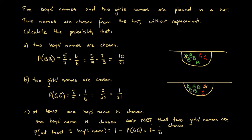So we rewrite this as one minus one over 21. Writing one as 21 over 21, we get 21 over 21 minus one over 21. Subtracting, 21 minus one is 20, giving us 20 over 21. So the probability that at least one boy's name is chosen is 20 over 21, and we're done.